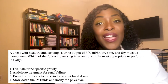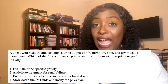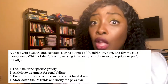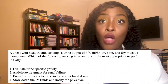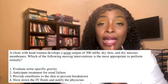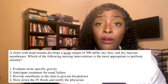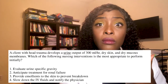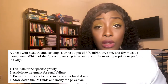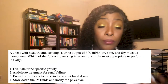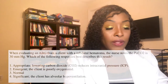Choice four — slow down the IV fluids and notify the doctor — is wrong. This patient is urinating over 300 mLs per hour and showing signs of dehydration. Patients with diabetes insipidus need lots of fluids; you are not going to restrict them. You do need to call the doctor, but you must assess first. Get that urine specific gravity to give to the doctor. The correct answer is one: evaluate urine specific gravity.